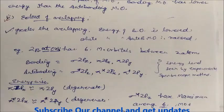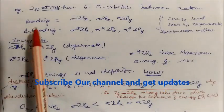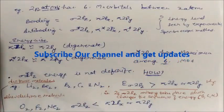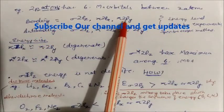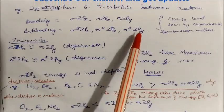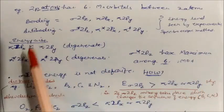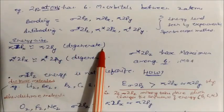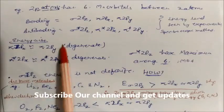Greater the overlapping, the energy of the bonding orbital is lowered while the energy of the anti-bonding orbital is raised. For example, two 2p atomic orbitals form six molecular orbitals between two atoms: sigma 2pz, pi 2px, pi 2py (bonding), and sigma star 2pz, pi star 2px, pi star 2py (anti-bonding). Pi 2px is almost equal in energy to pi 2py — these are called degenerate molecular orbitals. Similarly, pi star 2px and pi star 2py are also degenerate.